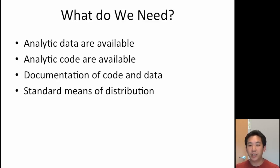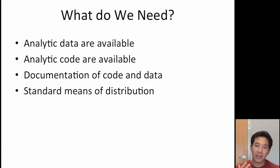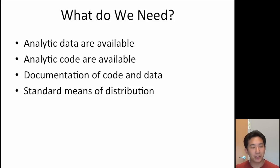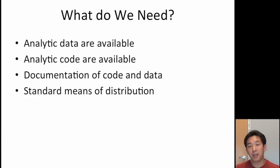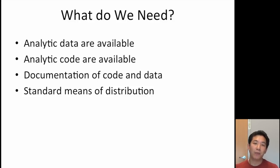So what do we need for reproducible research? One basic definition is that the analytic data be available — the data used for the analysis that was presented. This is different from the raw data, because very often not all raw data are used, but rather some subset. The analytic code is also important — the code applied to the analytic data to produce key results, such as regression modeling code. Documentation of that code and data is very important, and finally, some standard means of distribution so everything is easily accessible.